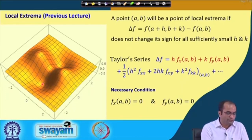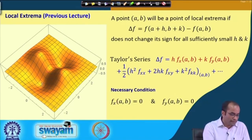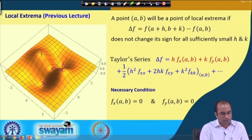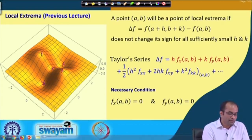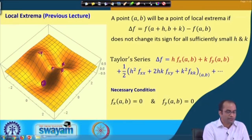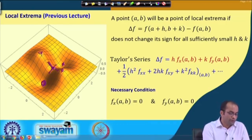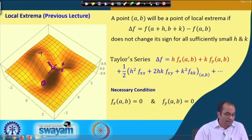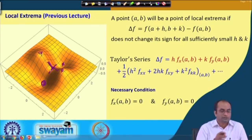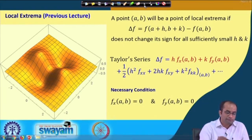We observed that there are, for example, five points which satisfy these conditions. There is a point here and a point there — a total of five points. In this lecture we will identify whether these are points of local minimum, local maximum, or saddle points. For instance, at one point the function increases in the x-direction but decreases in the y-direction, making it a saddle point. Mathematically, we will identify all these points using the second-order derivatives.